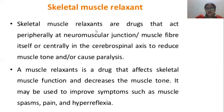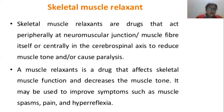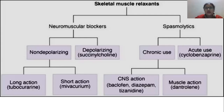Skeletal muscle relaxants are drugs that act peripherally at the neuromuscular junction, the muscle fiber itself, or centrally in the cerebrospinal axis to reduce muscle tone and/or cause paralysis. A muscle relaxant affects skeletal muscle function and decreases muscle tone and contraction. It may be used to improve symptoms such as muscle spasm, pain, and hyperreflexia.